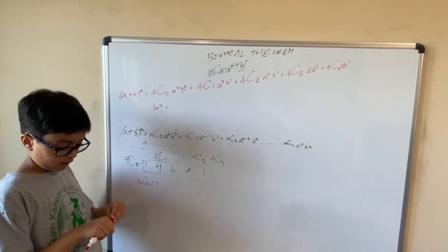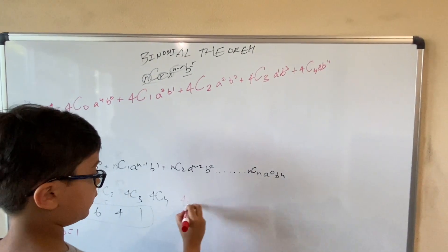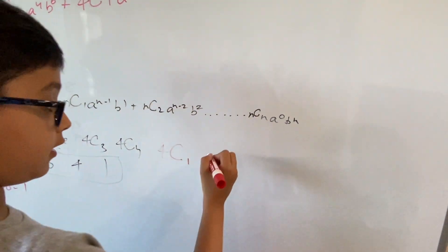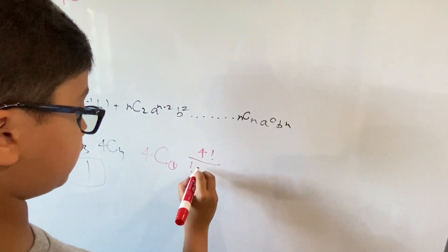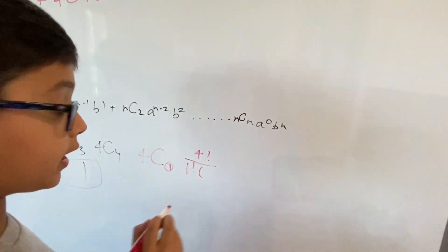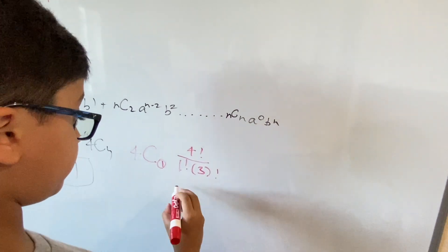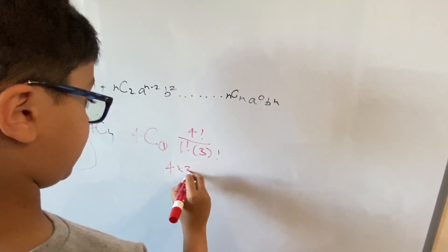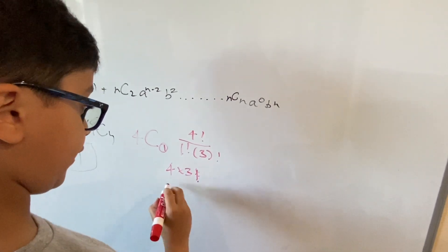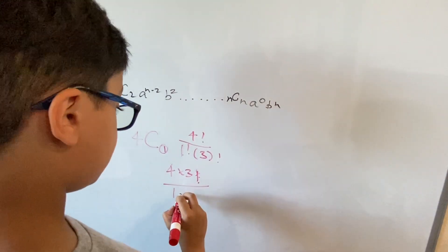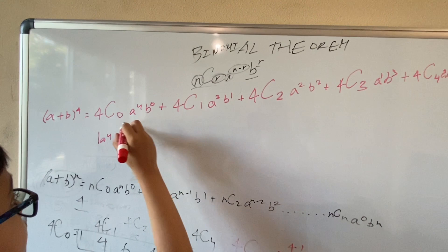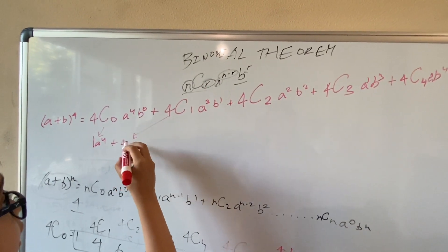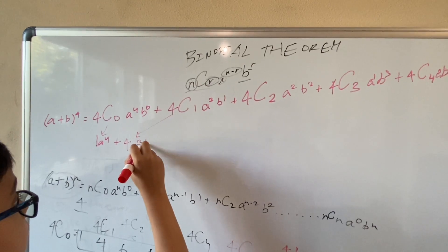Now to find 4C1: that will be 4 factorial over 1 factorial multiplied by (4 minus 1) = 3 factorial. To simplify: 4 factorial is 4 × 3 factorial, divided by 1 factorial × 3 factorial. You can cancel the 3 factorials, giving you 4 over 1, which makes it 4. So the second term is 4a³b.